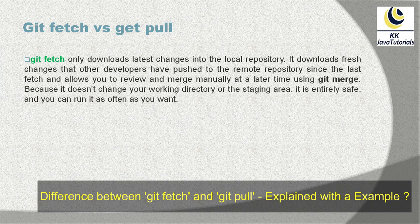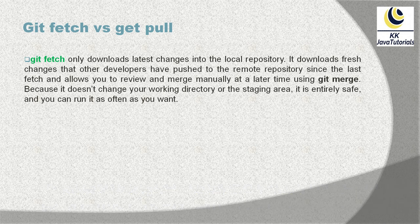When we talk about git fetch first of all — git fetch only downloads the latest changes into the local repository. It downloads fresh changes that other developers have pushed to the remote repository since the last fetch, and allows you to review and merge manually at a later time using git merge. It does not change your working directory or staging area.